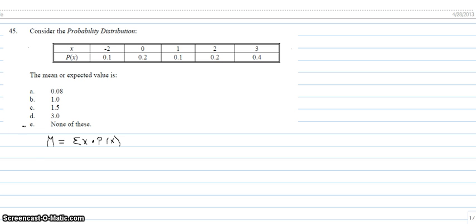Well, in order to find the mean or expected value, I've listed the formula below. We need the sum of x times P of x. So let's do this by hand, and then I'll show you how to do it in the calculator.